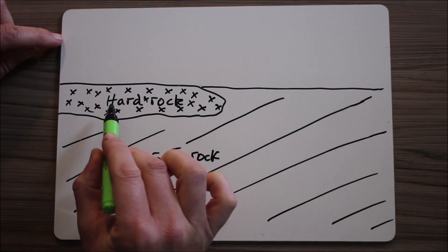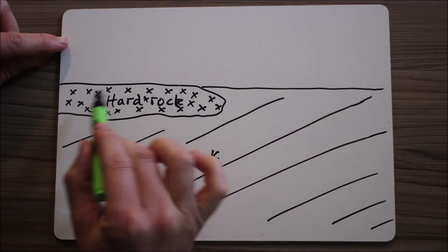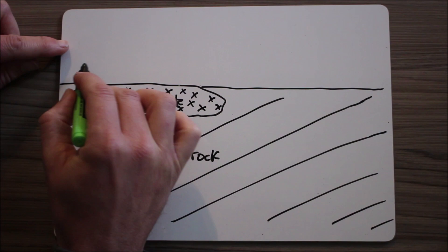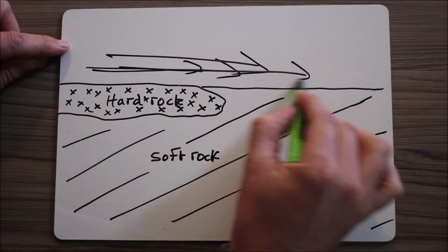A waterfall is formed by a river flowing over firstly hard rock and then soft rock. This area with the crosses in is the hard rock. The bit with the lines in is the soft rock, and here comes my river.